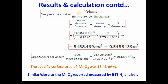Therefore, surface area A equals volume divided by diameter or thickness. Volume equals mass divided by density, divided by diameter — that is, mass divided by density multiplied by one over diameter. I have put in the values and obtained the surface area in meters squared. Therefore, the specific surface area equals surface area divided by mass of residue. Here is the final result: 38.439 m² per gram. Therefore, the specific surface area for manganese dioxide was 38.43 m² per gram.